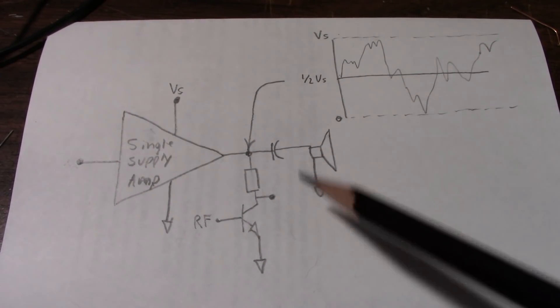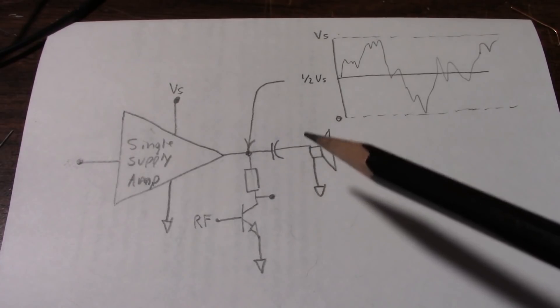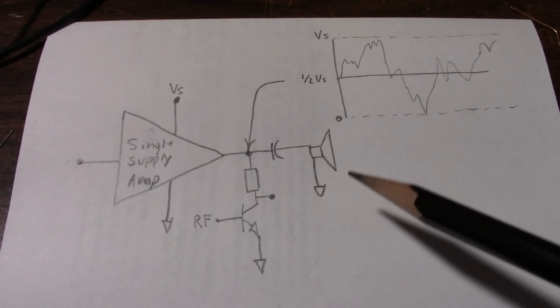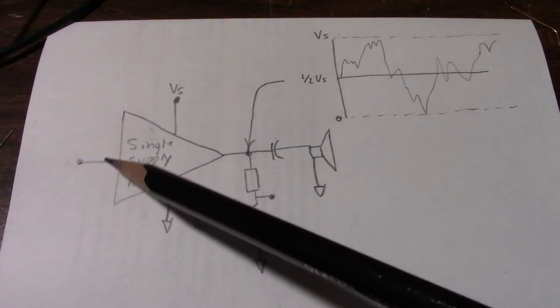So now that RF carrier signal is modulated with the signal that's being input to the amplifier. And that's called amplitude modulation because the signal is getting larger and getting smaller with our audio signal.